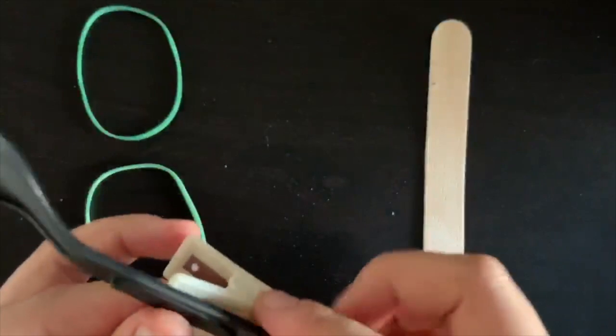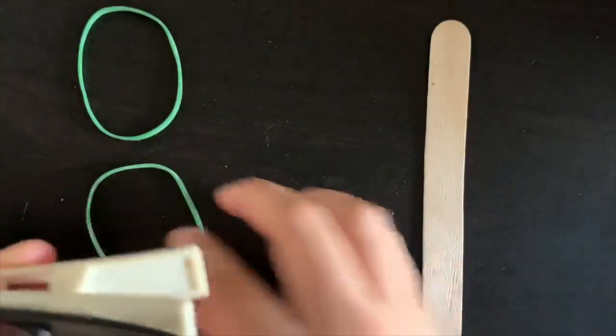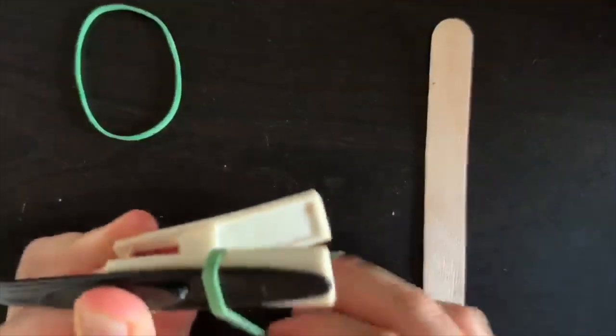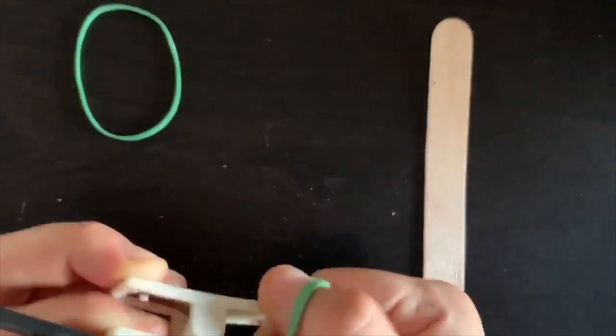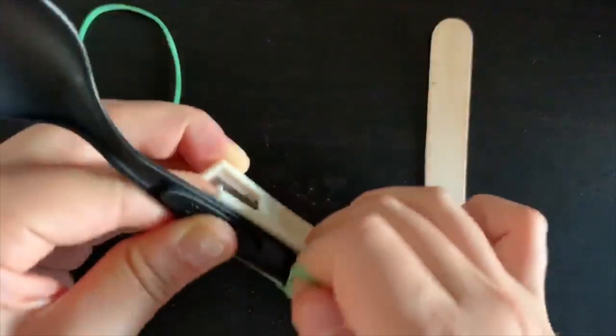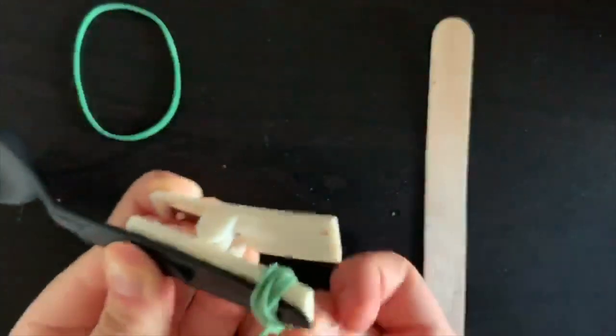So first you're going to place the spoon on top of the clothespin and then you're going to tie a rubber band around them. Make sure to only tie it around the first clip of the clothespin or else you'll close the whole thing shut, so just the top one.